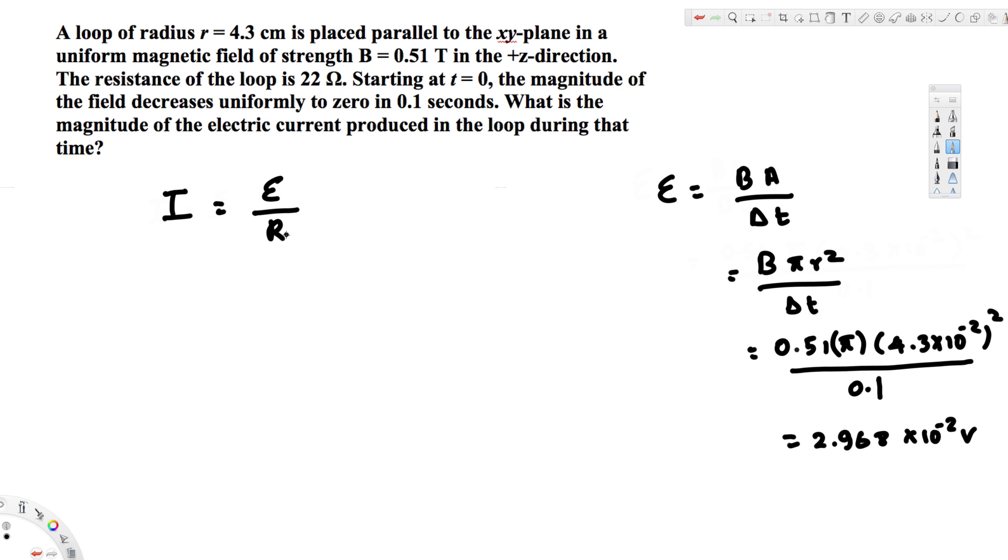so we can plug these into the equation to find the final answer. This is 2.968 × 10⁻² volts divided by the resistance,